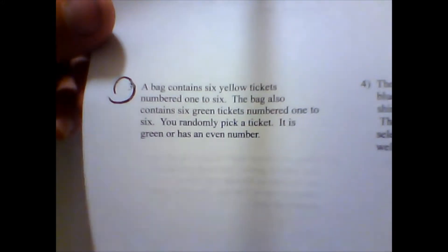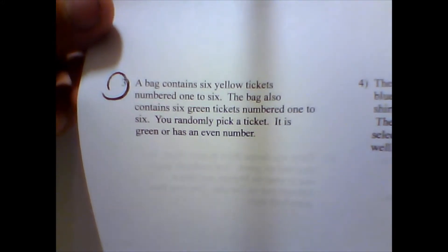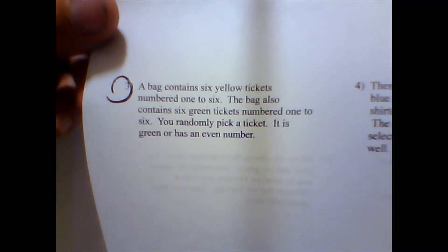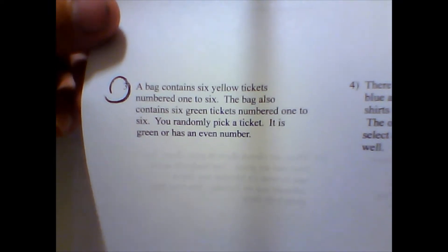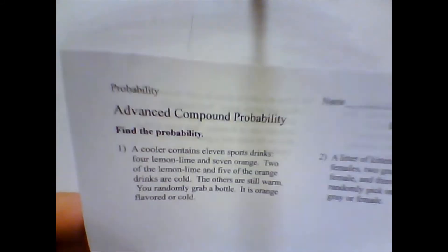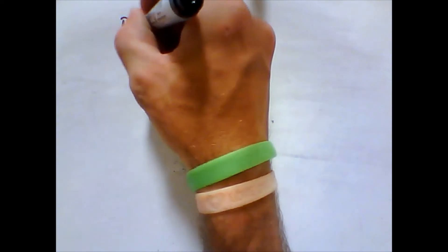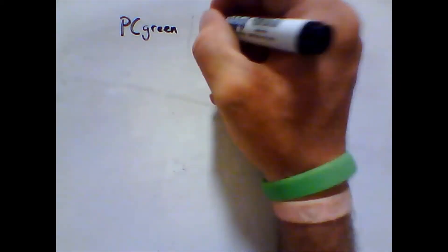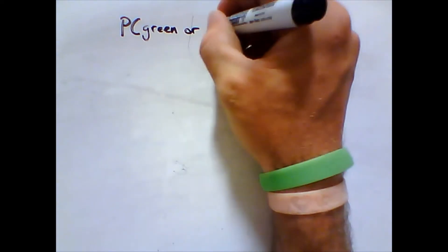I'm going to show how easy they are. So number three — a bag contains six yellow tickets numbered one to six. The bag also contains six green tickets numbered one to six. You can only pick a ticket that is green or has an even number. The directions say find the probability, so we're going to find the probability that it is green or even.